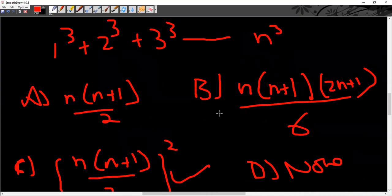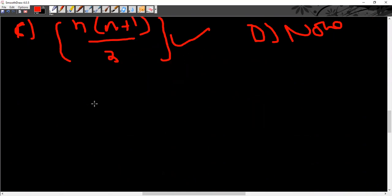Now put 3 in all of the options and see which option gives you 36. So 3 into 3 plus 1 divided by 2: 3 plus 1 is 4, 4 times 3 is 12, divided by 2 is 6.